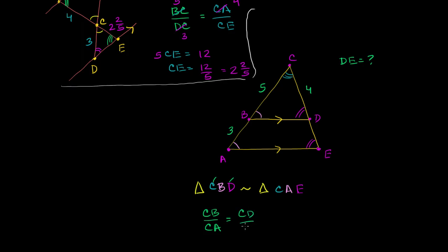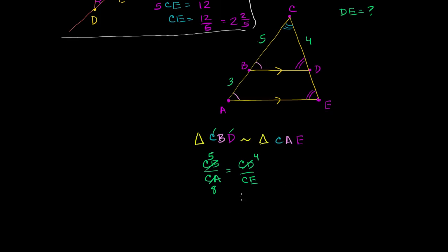CB is 5. We have to be careful — CA is not 3; this entire side is 5 plus 3, which is 8. And CD is 4. Cross-multiplying: 5 times CE equals 8 times 4, which is 32. So CE equals 32 over 5, or 6 and 2-fifths.